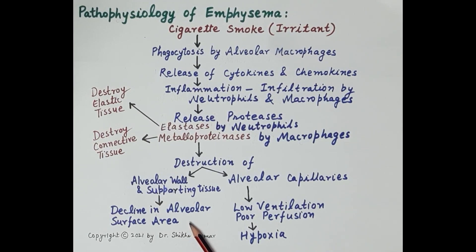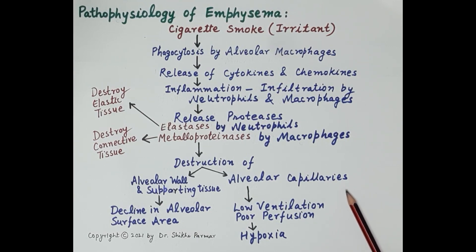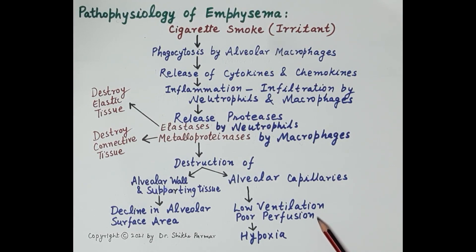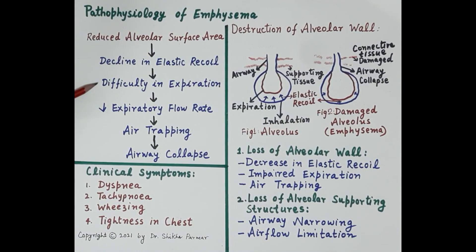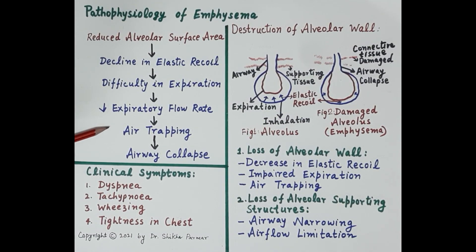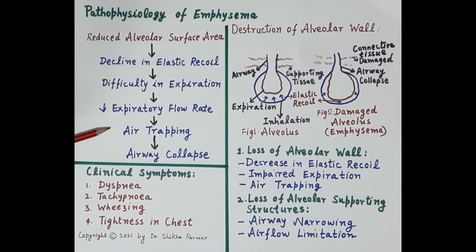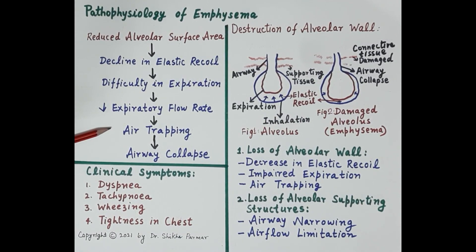Destruction of alveolar capillaries results in poor gas exchange, poor perfusion, and low oxygen in the blood — called hypoxia. Reduced alveolar surface area decreases elastic recoil, resulting in difficulty in expiration and a reduced expiratory flow rate, causing air to remain trapped in the lungs. Narrowing and collapse of respiratory passages due to destruction of supporting connective tissue further contributes to shortness of breath.